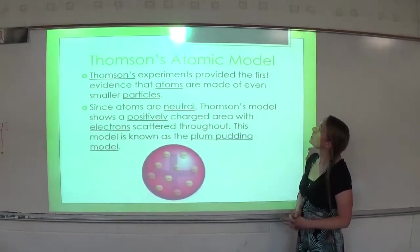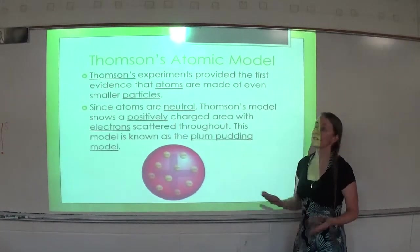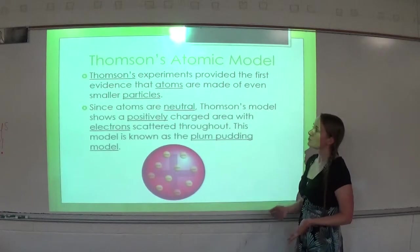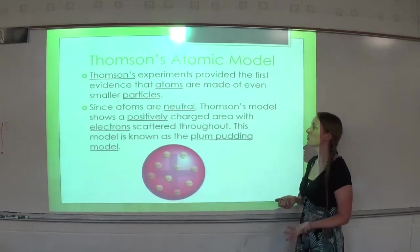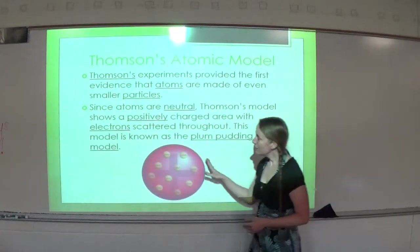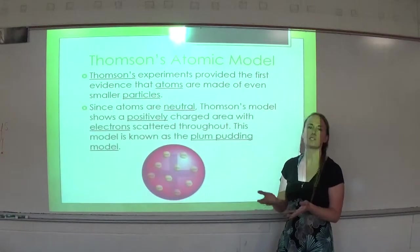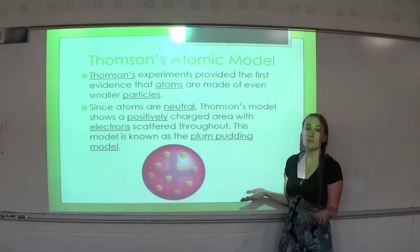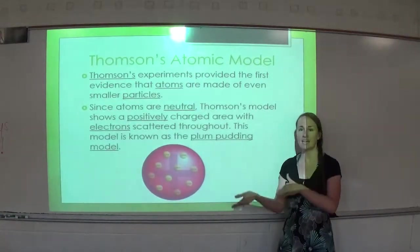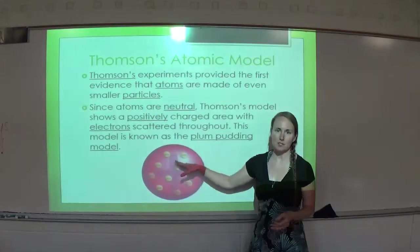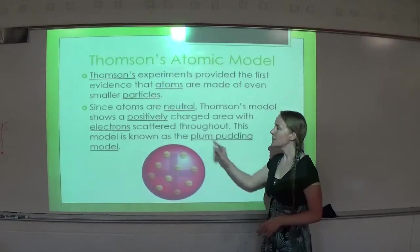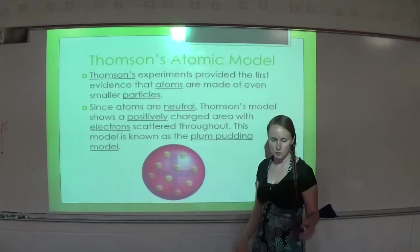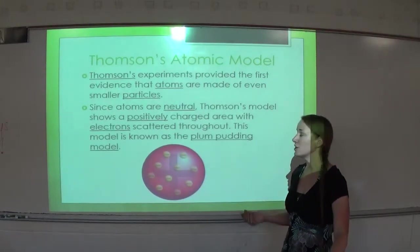Thomson's experiments provided the first evidence that atoms are made up of even smaller particles — something else besides just a ball. Since atoms are neutral, Thomson's model shows a positively charged area with electrons scattered throughout. This is known as the plum pudding model. He thought there was a big positive force field with electrons throughout it, to balance out the negative charge. It's called the plum pudding model because that was a popular dessert in Europe — I refer to it as the chocolate chip cookie model, where the cookie is the positive force field and the chocolate chips are the electrons.